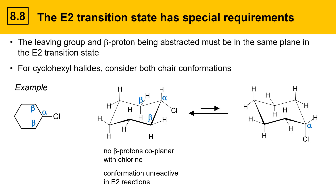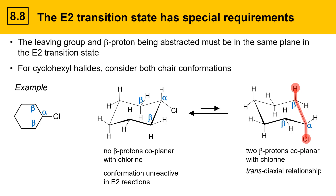With the chlorine in the axial position, the alpha position and the two adjacent beta positions are identified. In this case, there are actually two protons that are coplanar with chlorine. The axial hydrogen lies in the same plane as the chlorine atom. This relationship is called trans-diaxial because both groups — the hydrogen and the chlorine — are trans to each other and both axial. This is one of the key relationships to look for when identifying reactive beta protons in E2.